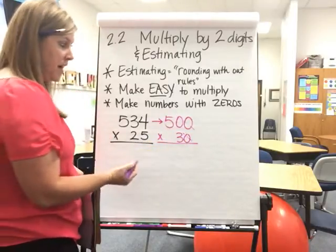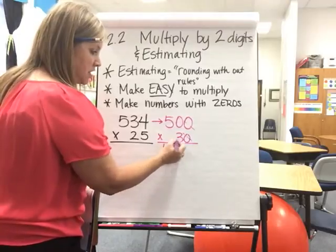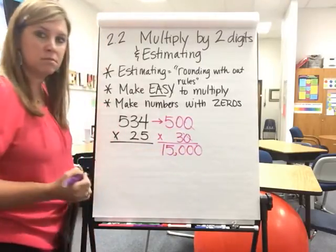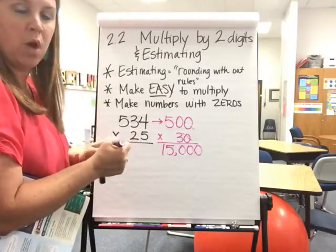So just mark them off. What's left? 5 times 3 is 15. One, two, three. One, two, three. Same thing as before with one digit. Now you've got two digits.